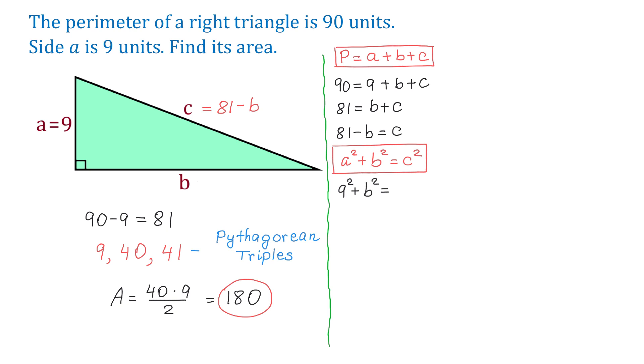And on the right side, we will replace C with 81 minus B, and we will have 81 minus B squared. And now we need to solve this equation for B. To remove the parenthesis, we will use the formula A minus B to the second power equals A squared minus 2AB plus B squared.